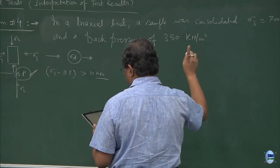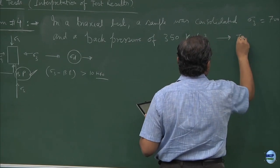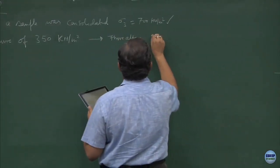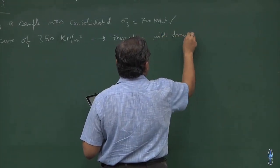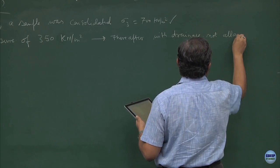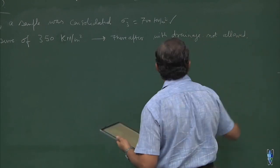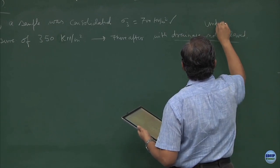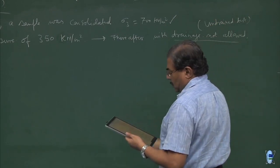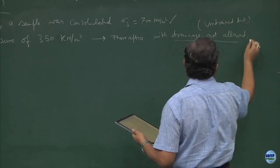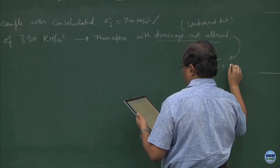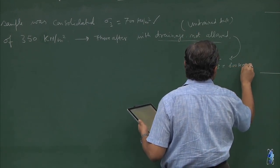Having done all these things thereafter with drainage not allowed, that means it is an undrained test, typical undrained test. The cell pressure was raised to 800 kN per meter square.